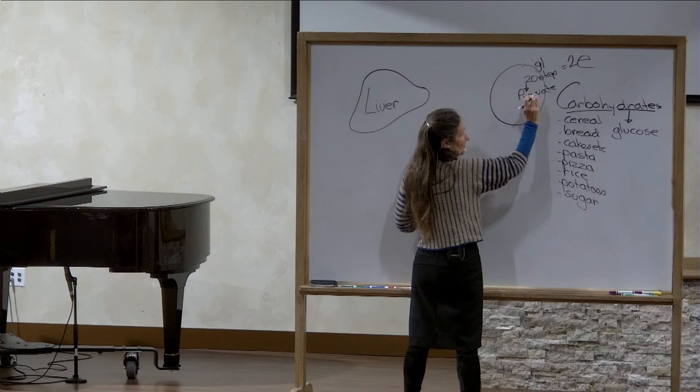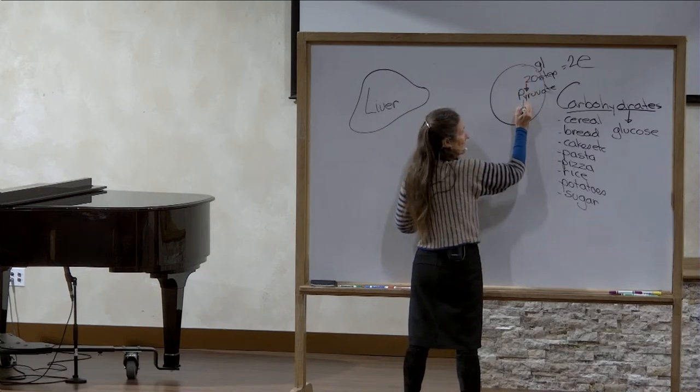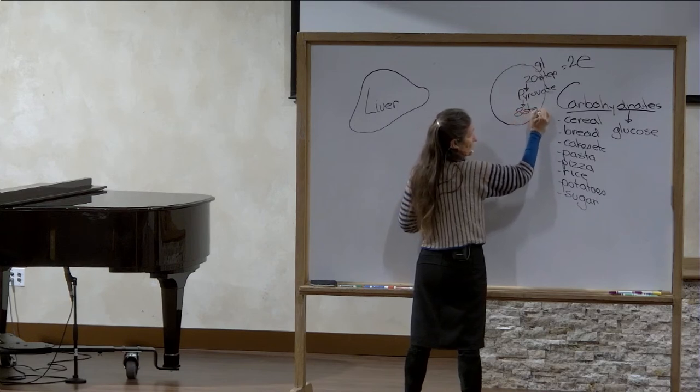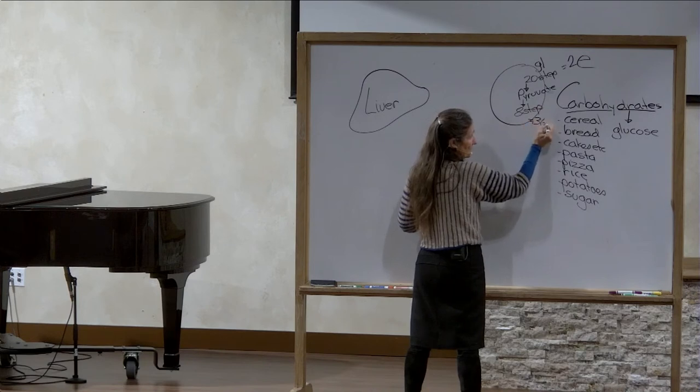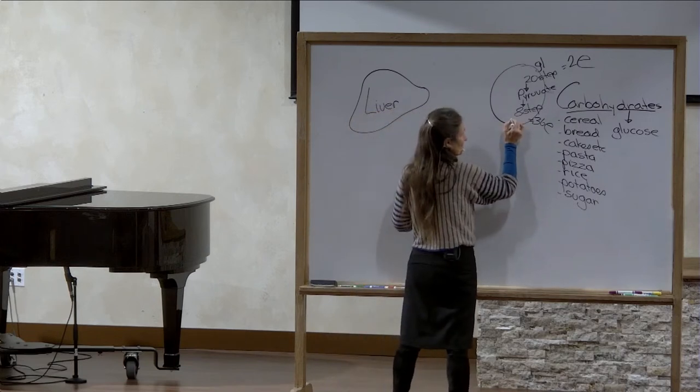The chemical form of glucose that comes out of the 20-step pathway goes into an 8-step pathway. This 8-step pathway is called the powerhouse of the cell because of its ability to deliver 36 units of energy. What makes the difference? It's oxygen. This pathway, no oxygen.